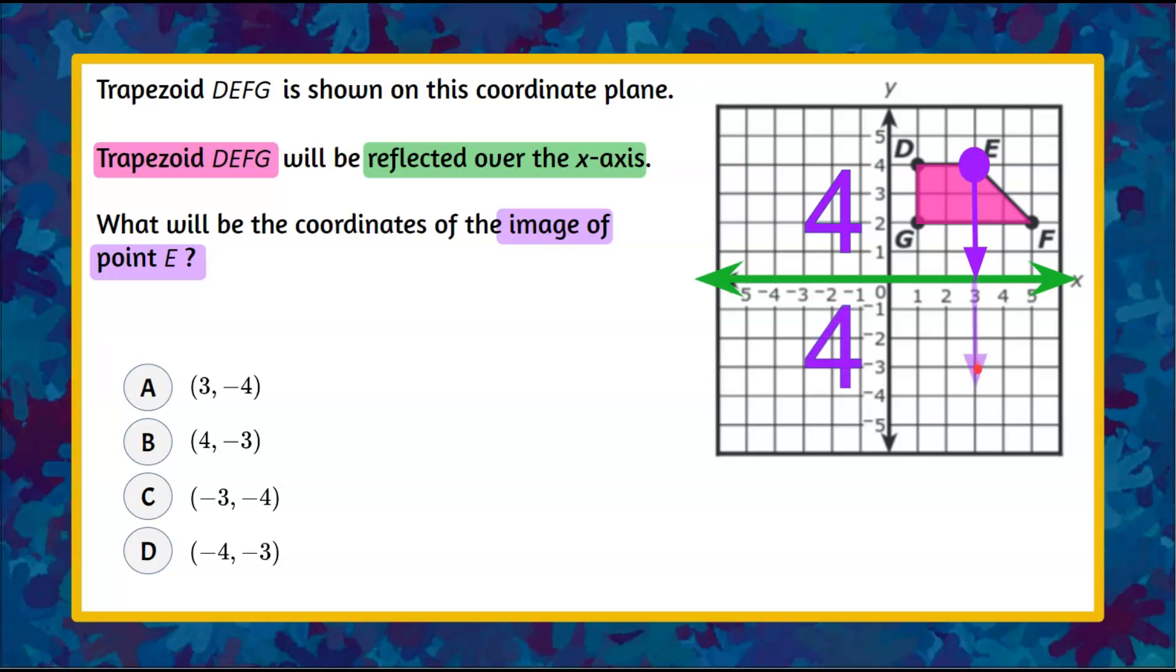So now we're going to start here, and we're going to go 4 units below. So 1, 2, 3, 4, and plot our point, and that is our image E prime.